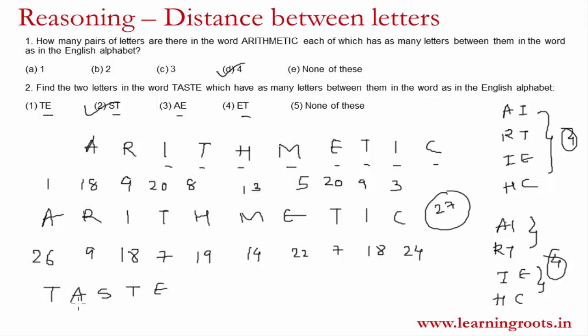Taste is present. So T, U, V, W, X, nothing. A, B, C, D, nothing. S, T, yes. ST is one pair. So only ST is the correct option and so that is our answer.